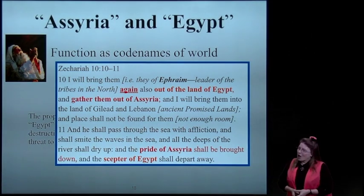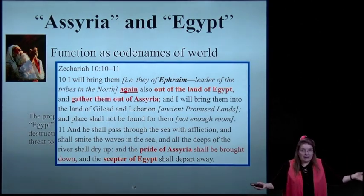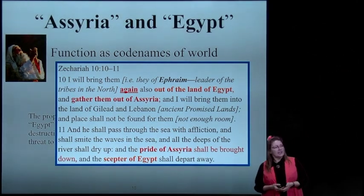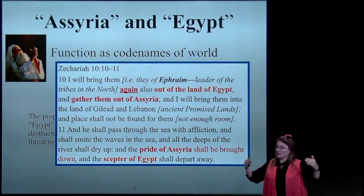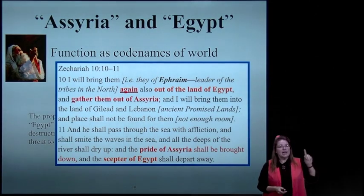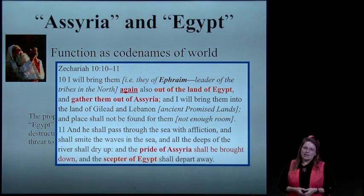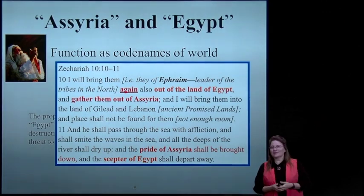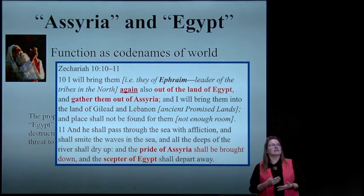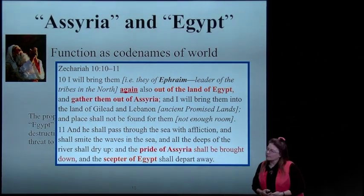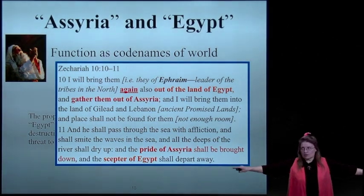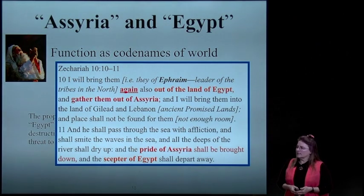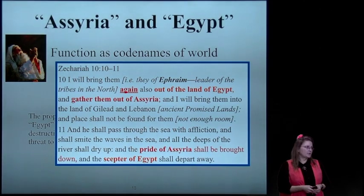Those were metaphors for the promised lands in the Old Testament, and place shall not be found for them—there's not enough room for all those who will gather in this grand end-time gathering. Notice that they gather from our end-time superpowers that are in conflict with each other. He shall pass through the sea with affliction and smite the waves; the depths of the river will dry up. We're about to review that the king of Assyria is called 'the river.' The river will dry up and the pride of Assyria shall be brought down.